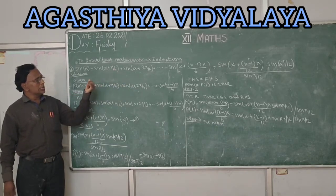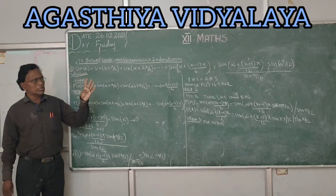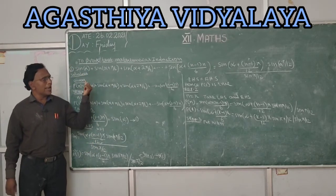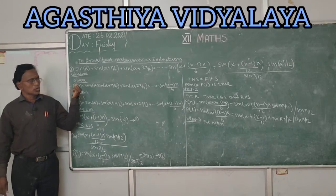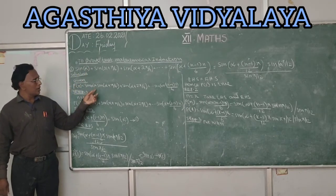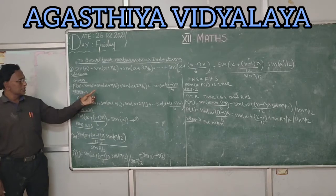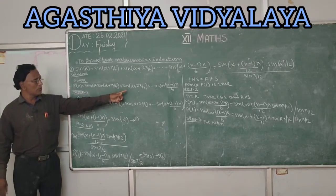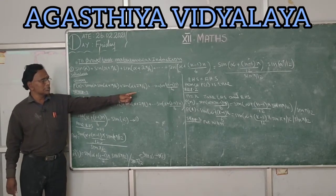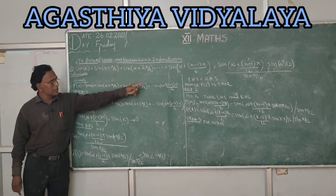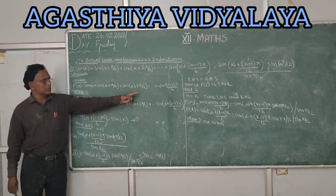In this problem there are three steps for mathematical induction. Step 1: put n equal to 1. Let P(n) denote the statement: sin α + sin(α + π/6) + sin(α + 2π/6) + ... + sin(α + (n−1)·n/6).